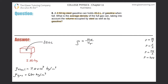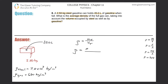Once I understand that the overall density — the average density — of an object means taking the total mass divided by the total volume, I can figure out what the total mass means in this problem. We're talking about the mass of the gasoline can itself, which is made of steel, plus the mass of the gas once it's added. This whole object has a greater mass than when it's empty.